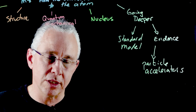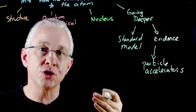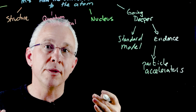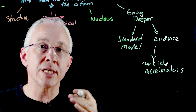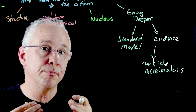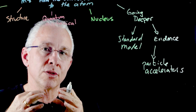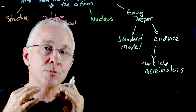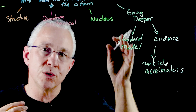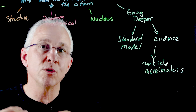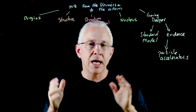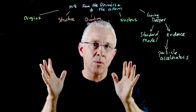For example, the LHC at CERN was able to show the existence of the Higgs boson. SLAC was able to accelerate electrons at high speeds to show that protons can be described as made up of smaller particles — in other words, the model of the quark, developed within the standard model, was verified by experiments at SLAC.